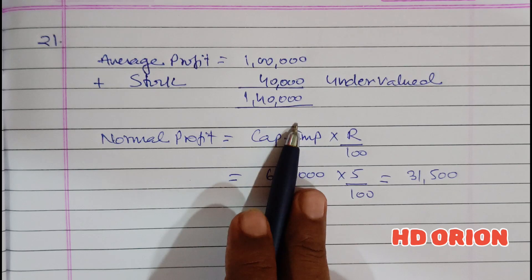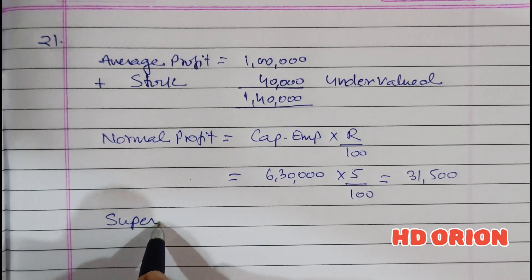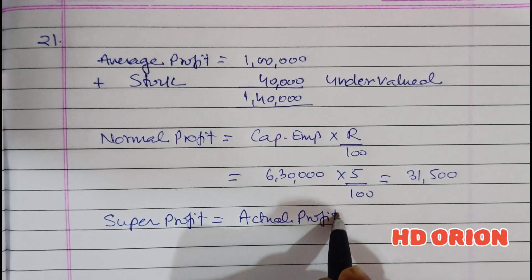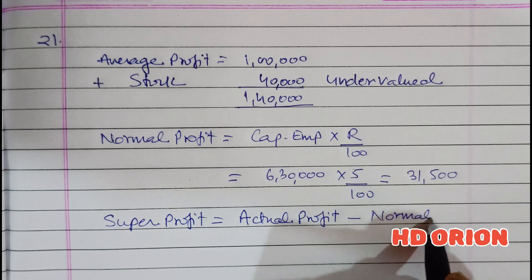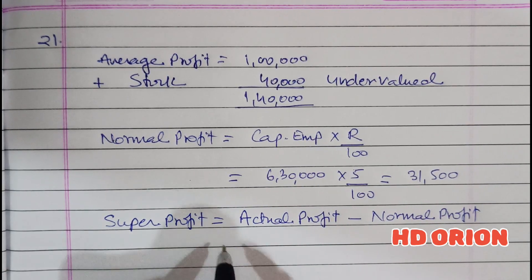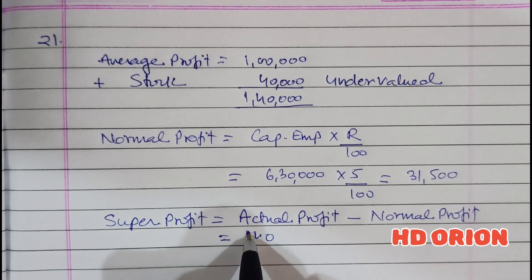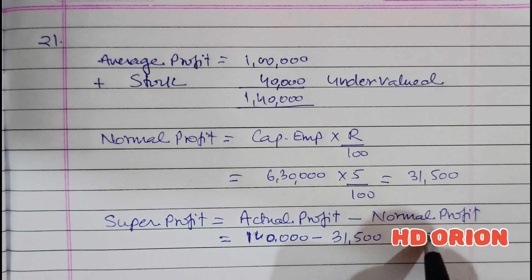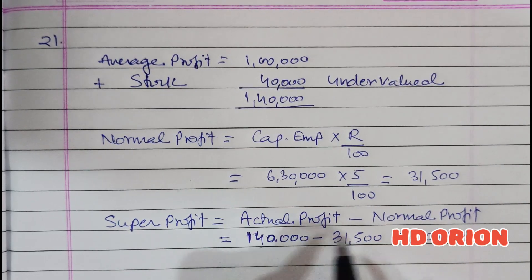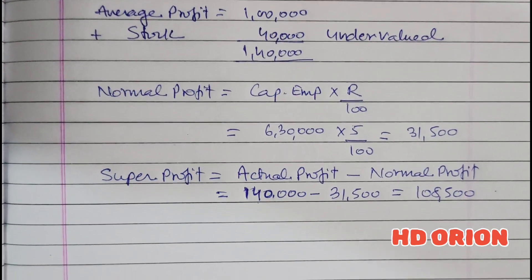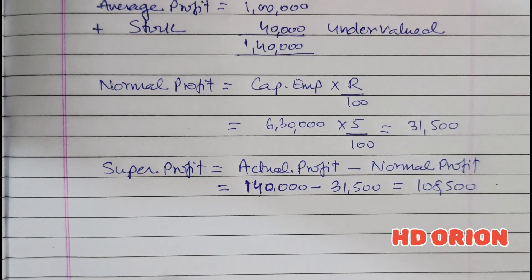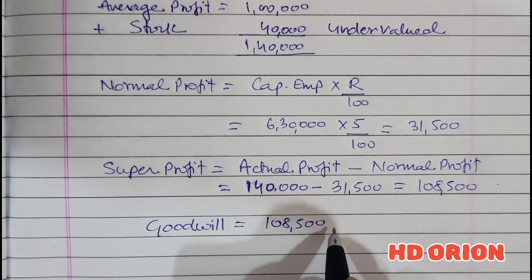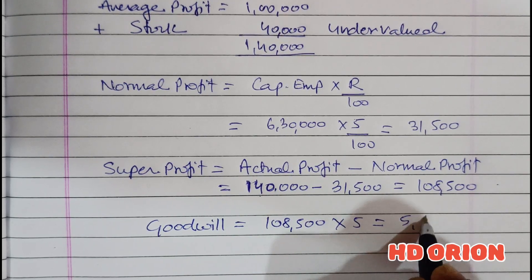Super profit is equal to actual profit minus normal profit: ₹1,40,000 minus ₹31,500 gives us super profit of ₹1,08,500. The question asks that goodwill be calculated at 5 times the super profit, so goodwill equals ₹1,08,500 multiplied by 5, which equals ₹5,42,500. That is our answer.